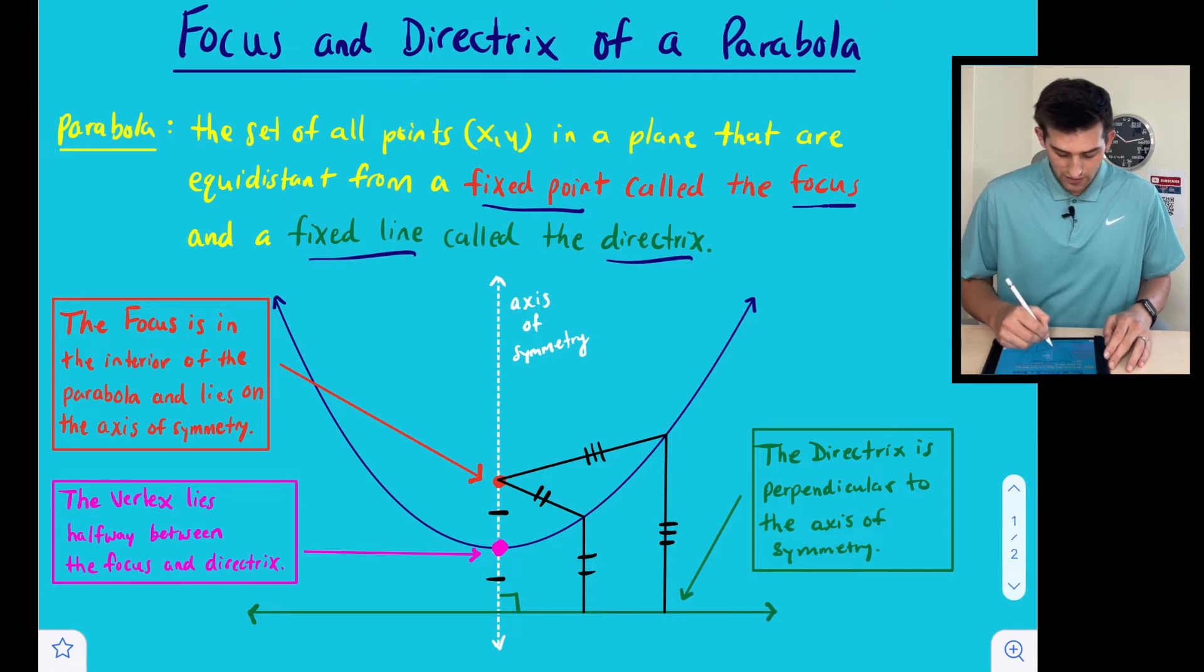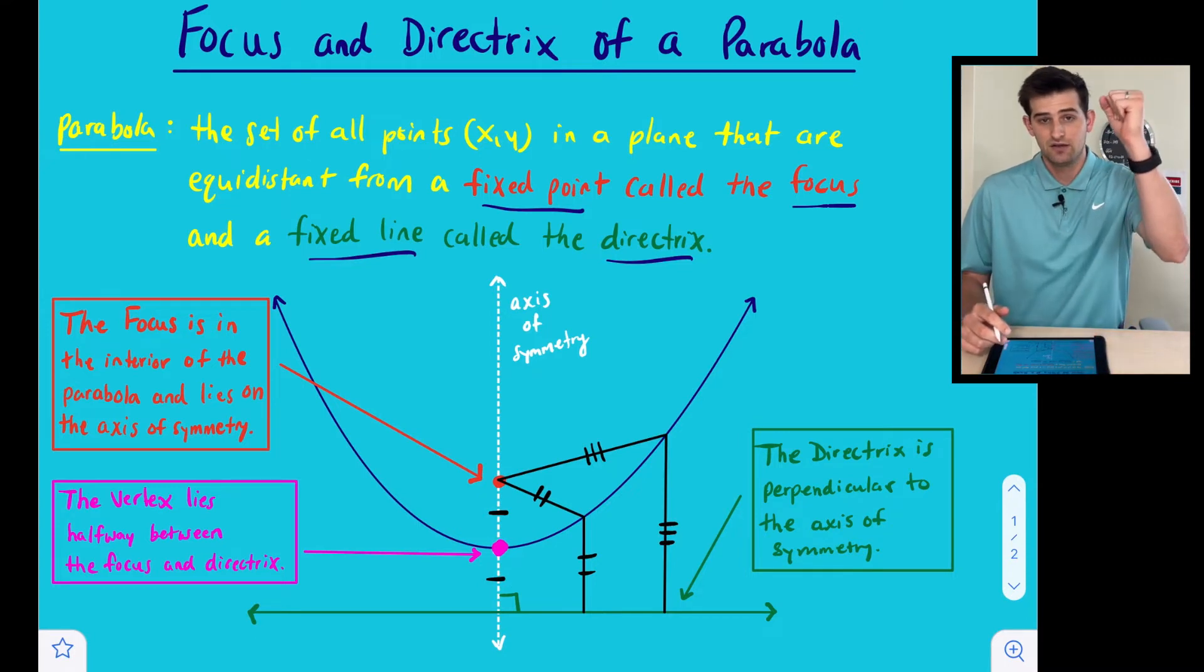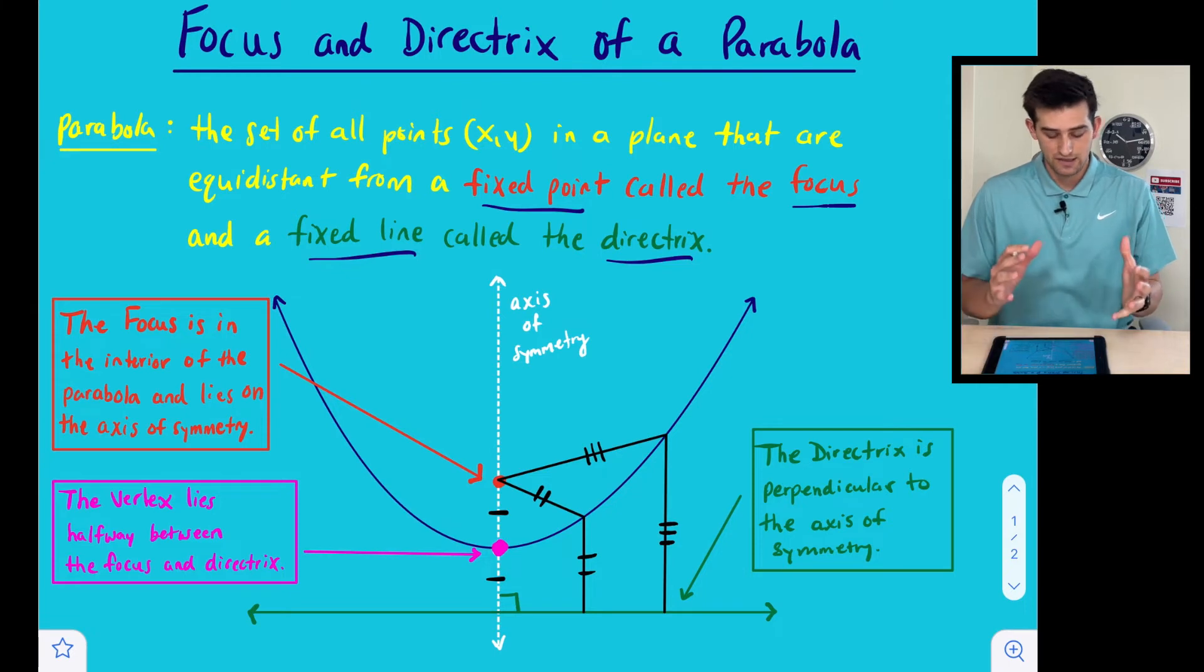So since that's where it's located, notice we have these black tick marks here. That's telling us that that distance from the vertex to the focus and from the vertex to the directrix is the same distance. That's a key definition there.